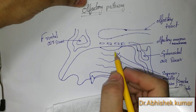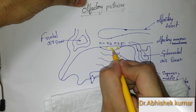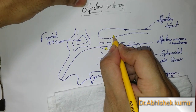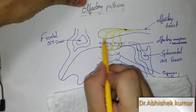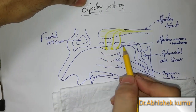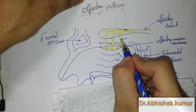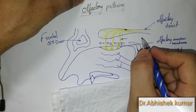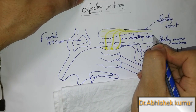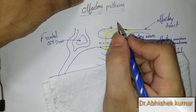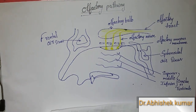With a yellow pencil, I am representing the nerves which arise from the olfactory mucous membrane and pass through the cribriform plate of ethmoid to enter the olfactory bulb. These are the olfactory nerves, which arise from the olfactory mucous membrane, pass through the cribriform plate, enter the olfactory bulb, and then travel in the olfactory tract.